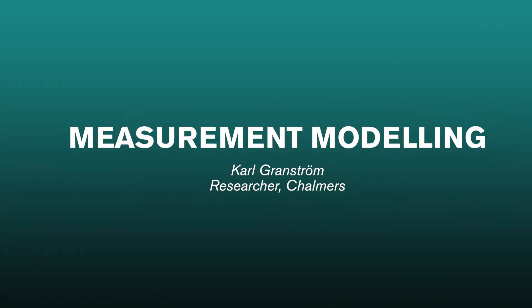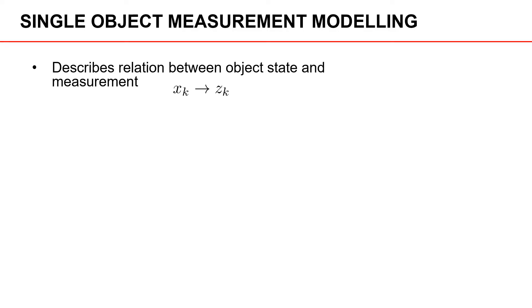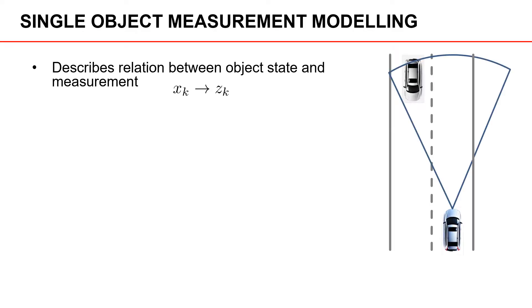The single object measurement modeling describes the relation between the object state X and the corresponding measurement. Let's consider an illustration with an autonomous car, and in the opposing lane there is a vehicle. This vehicle has some state represented by this cross sign, and the autonomous vehicle is equipped with some sensor that detects the car in the opposing lane. The measurement is represented by the red circle.